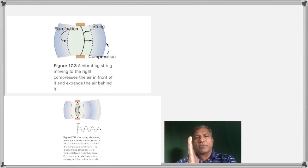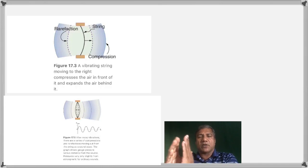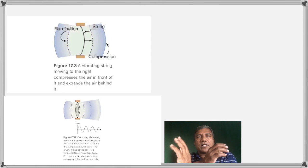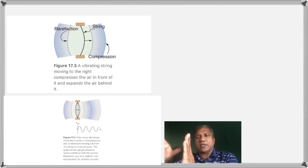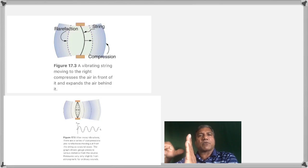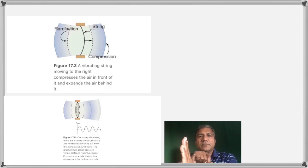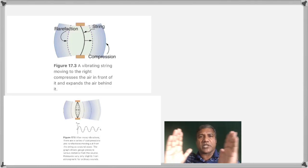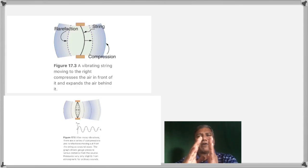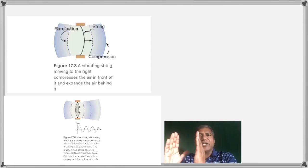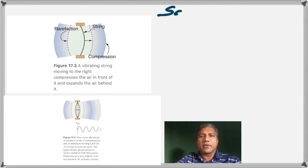When the string goes to the right side, the particles on the right side are pushed or compressed. That produces an increased pressure, while the particles on the left side are pulled away, producing a region of reduced pressure. The increased pressure region is called a compression and the decreased pressure region is called a rarefaction. So sound propagates as longitudinal waves — as compressions and rarefactions — a train of waves with increased and decreased pressure regions.